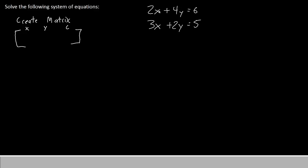So in my first equation, I'll enter 2, 4, 6 — 2 underneath the x, 4 underneath the y, and 6 underneath the constant. The second equation will be 3, 2, 5, again in that order.